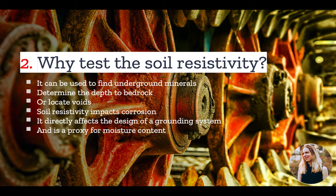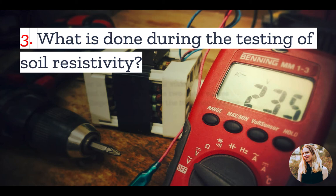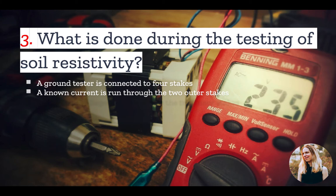Number three: what is done during the testing of soil resistivity? There are a couple different methods that are used, but at a high level, it involves connecting a ground tester to stakes that are embedded in the ground. In one version of the test, you use four stakes. The tester will run a current through the two outer stakes, and the current will run through the ground to the two inner stakes, which measure the drop in voltage.